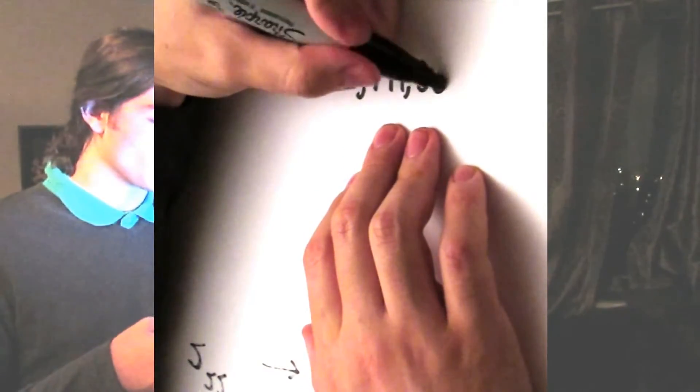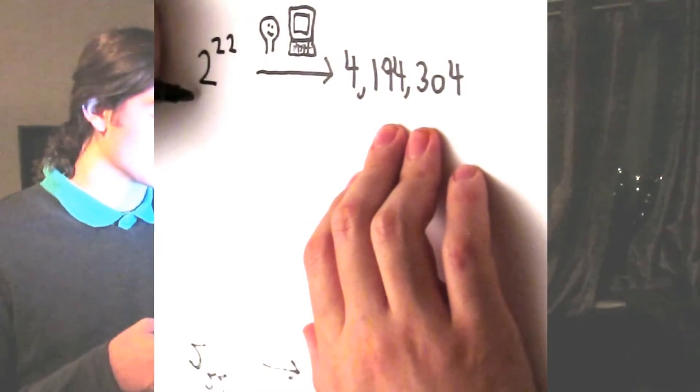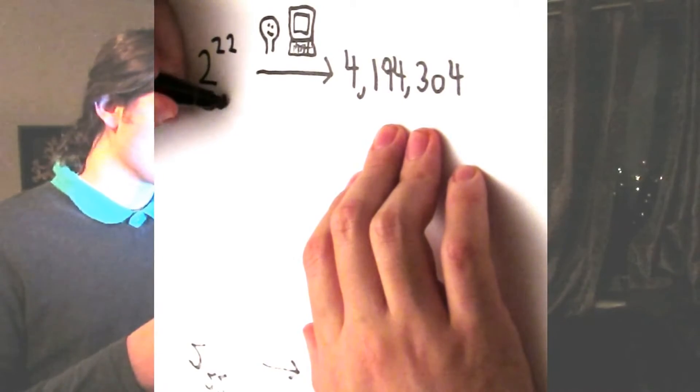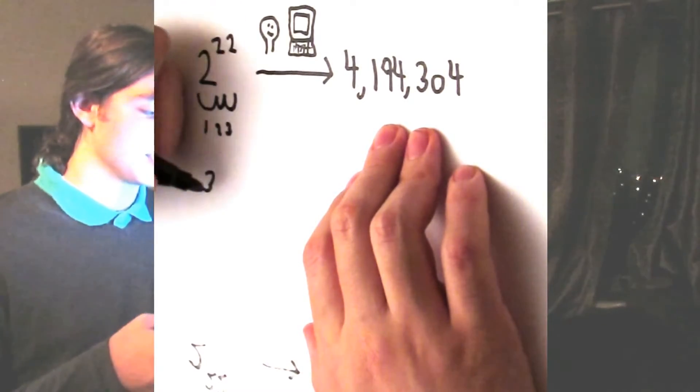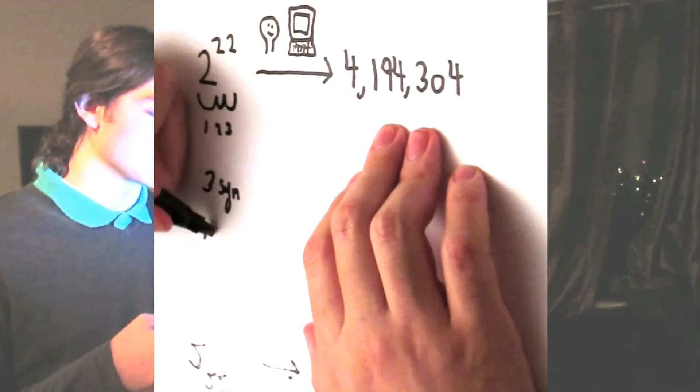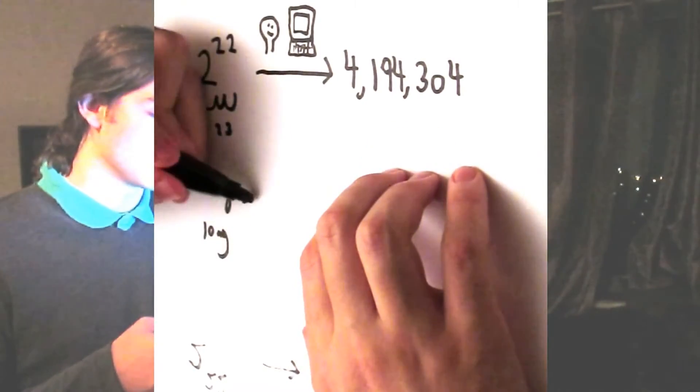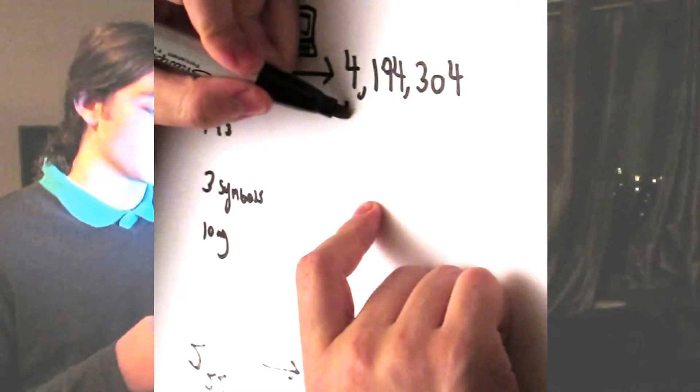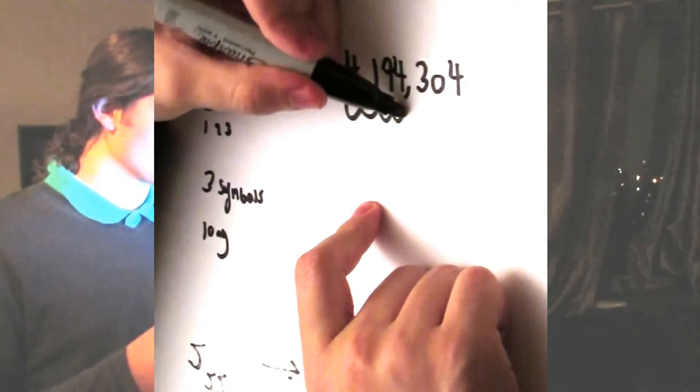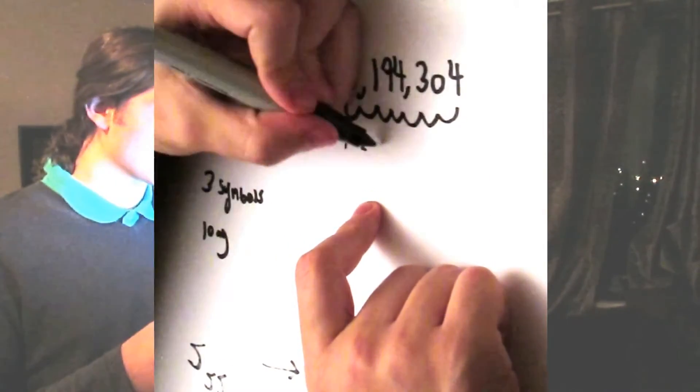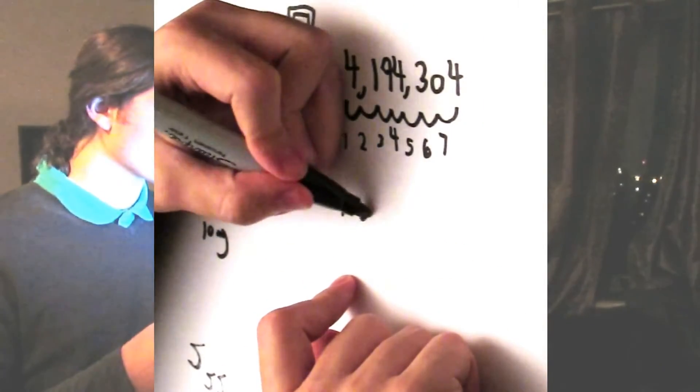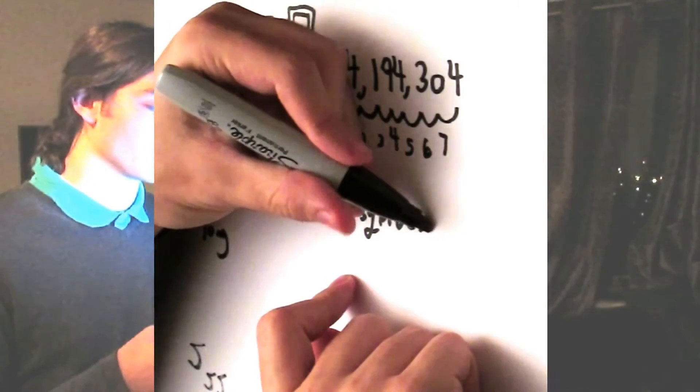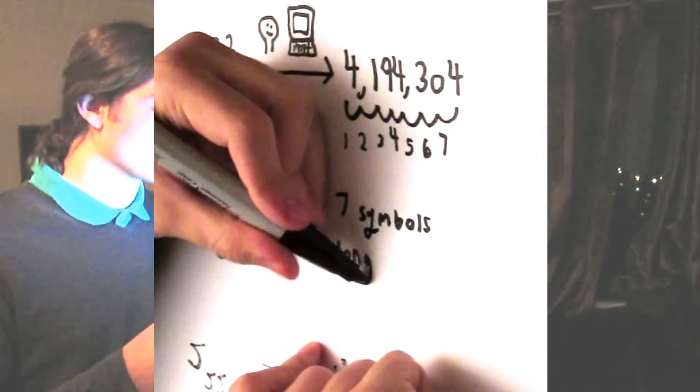While human computers once had to do computations like this themselves by hand, computers, digital computers, now do it automatically. Here they can connect descriptions to things just as well as humans, and we consider any sort of machine that can too. So given some thing for every possible description that any machine might accept, we wonder if there's a sort of normal description for it, one that we choose over all the others.